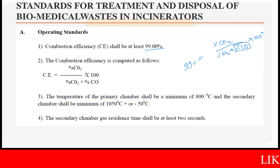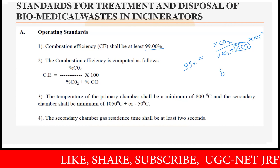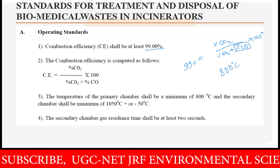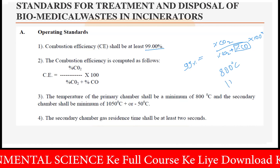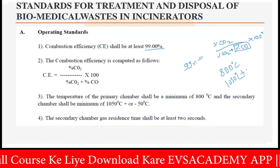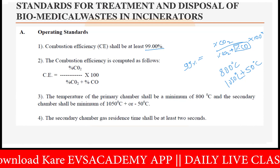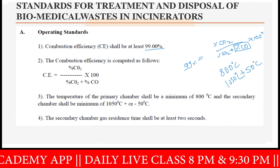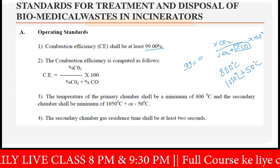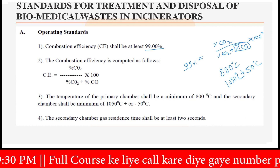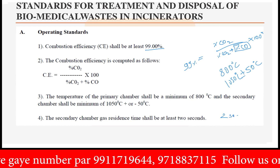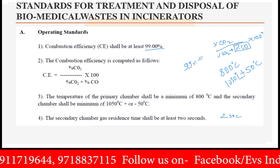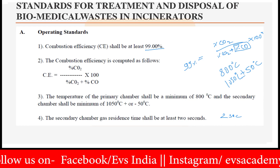The next standard states that the temperature of the primary chamber shall be a minimum of 800°C — you cannot burn the material below 800°C. The secondary chamber shall be 1050°C ±50°C, meaning a range of 1000 to 1100°C. The next standard states that the secondary chamber gas residence time shall be at least 2 seconds — the gas must stay there for 2 seconds, and only after complete burning can it be released into the environment.